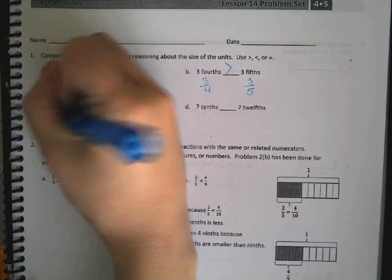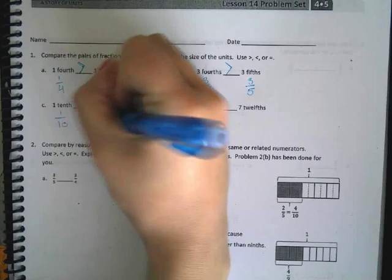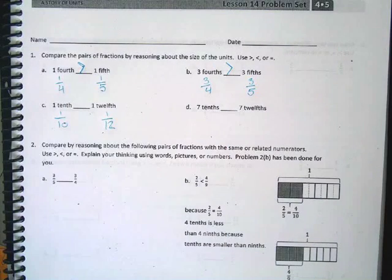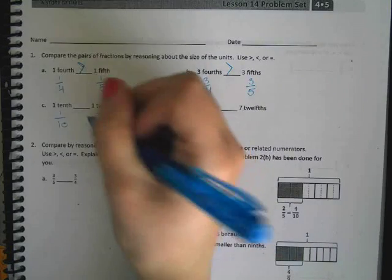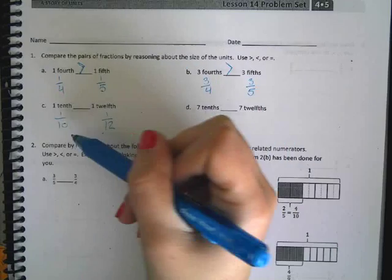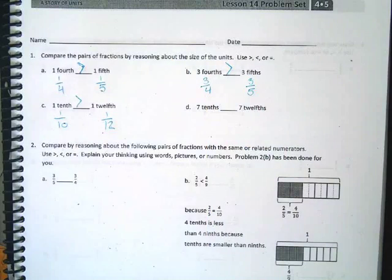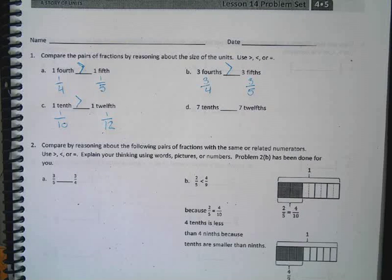One-tenth and one-twelfth. Someone walk me through this one. Corvion, go for it. One-tenth is bigger because the denominator is smaller, and it's bigger than all pieces. For things like, we had one-tenth, so it's bigger than that. Yes, exactly. Right on. Great job.